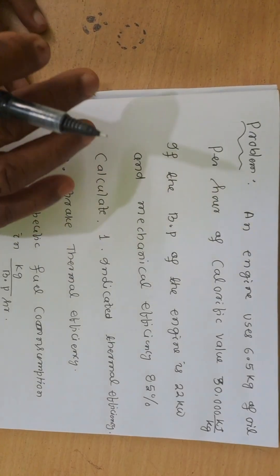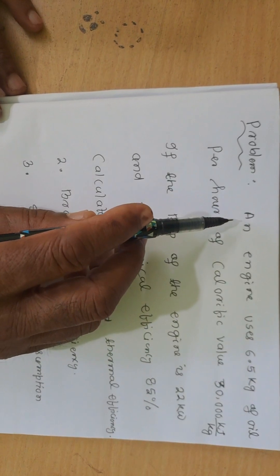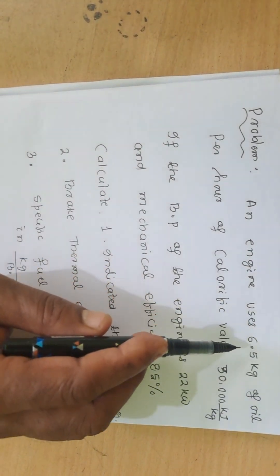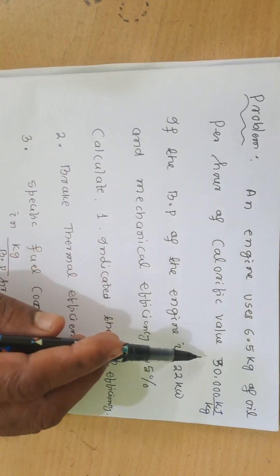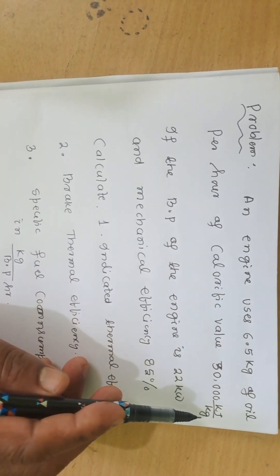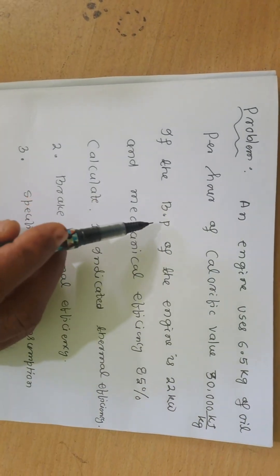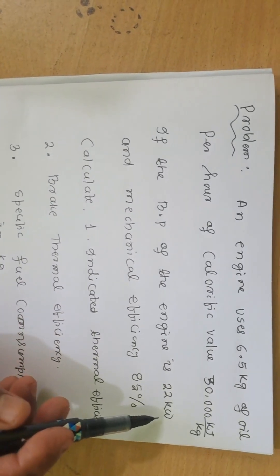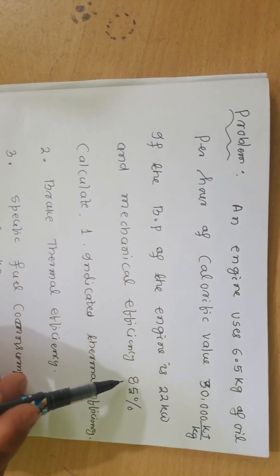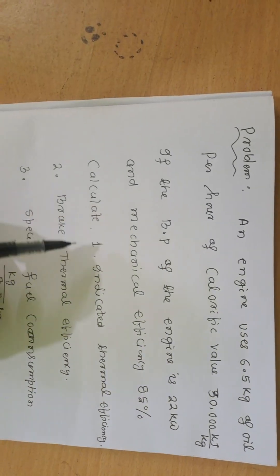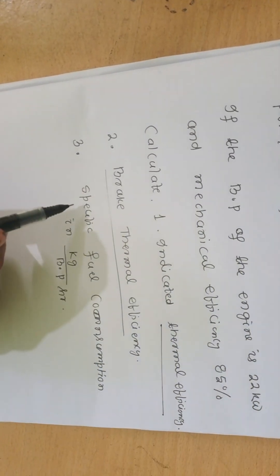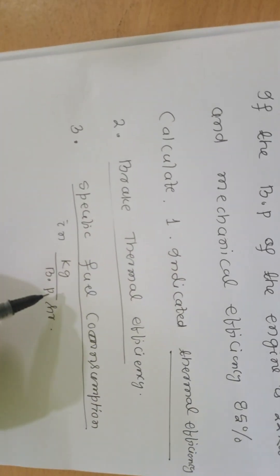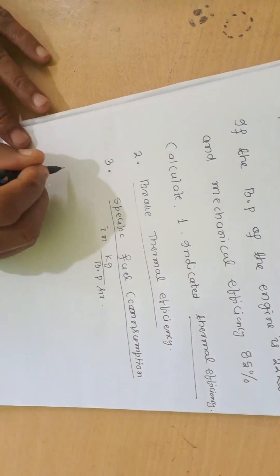The question is: An engine uses 6.5 kg of oil per hour with a calorific value of 30,000 kJ/kg. If the brake power of the engine is 22 kilowatt and mechanical efficiency is 85%, calculate: (1) indicator thermal efficiency, (2) brake thermal efficiency, and (3) specific fuel consumption in kg per BP hour.